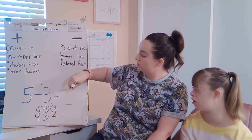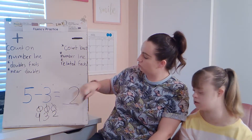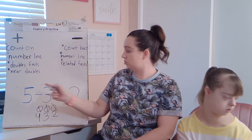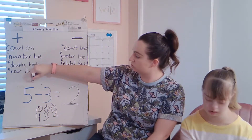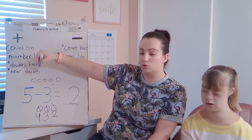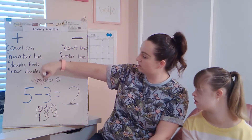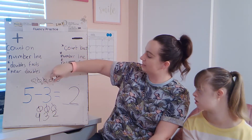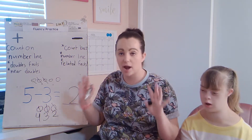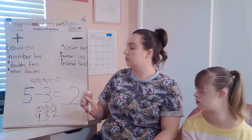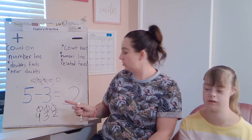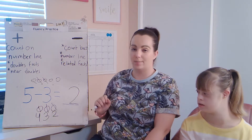Two. Yes, so I write a two right here. Or if you really need to, you could have drawn five circles — one, two, three, four, five — then subtracted three: one, two, three — and seen that you had two left. Any strategy you need to do. We're just trying to become quicker and quicker and more accurate on our subtraction problems.